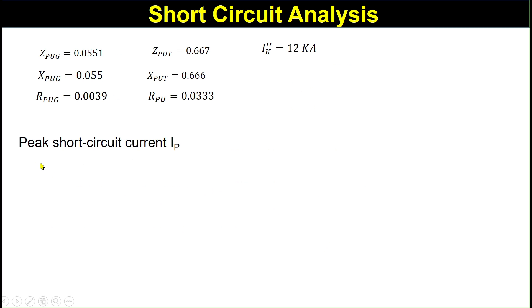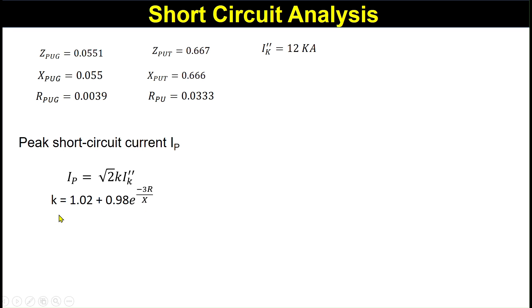Now we will calculate the peak short circuit current, ip. The formula is: ip = root(2) × k × ik'', where k = 1.02 + 0.8 × e^(−3R/X). To find the value of k we need the resistance and reactance up to the fault point. So first we calculate R, then X, and then the ratio −3/X by R.